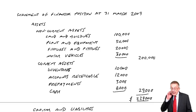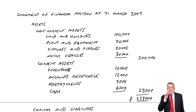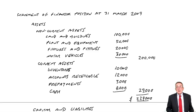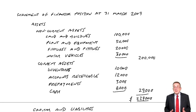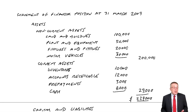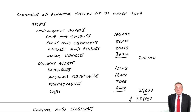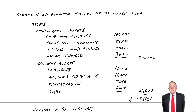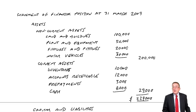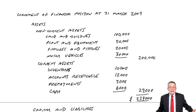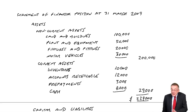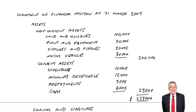First of all, look at the heading. It's the statement of financial position at a particular date. By law, they've got to do it once a year. Some companies might do it every month, but you've got to do it once a year. But the business can choose its own year end, so it doesn't always have to be 31st December, the end of an ordinary calendar year. This business has decided to do it every 31st of March — that's the business's year end.